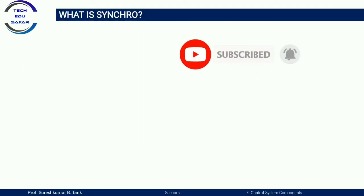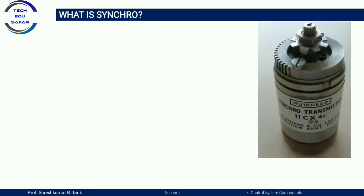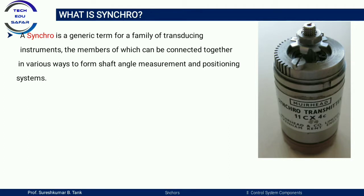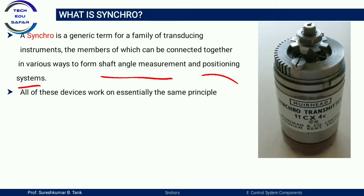Synchro is an electromechanical device. The first topic is: what is synchro? Synchro is a type of transducer that converts to an electrical signal. Synchro is a generic term for a family of transducing instruments, the members of which can be connected together in various ways to form soft angle measurement and positioning systems.